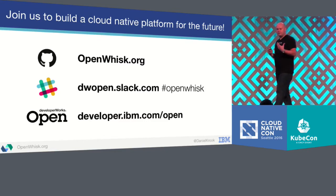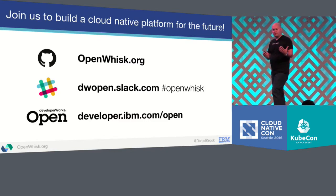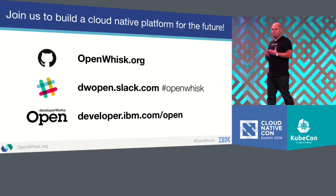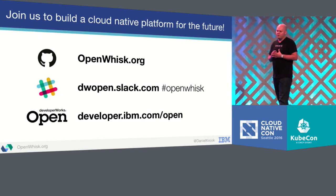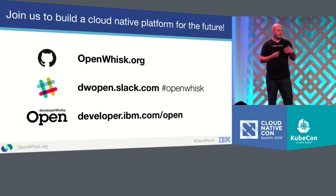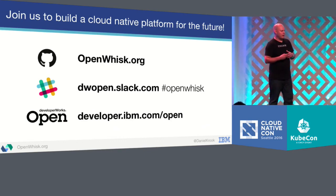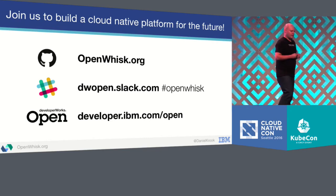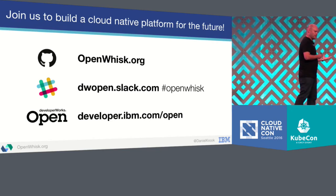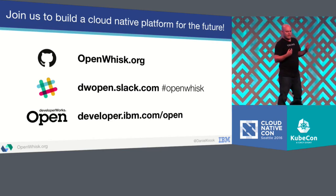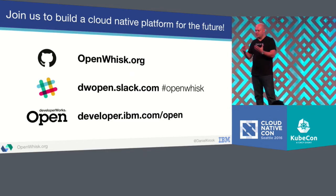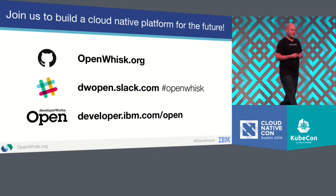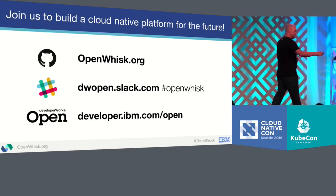We invite you to either try it out as a developer on bluemix.net, or if you're interested in joining the open-source community we're building around OpenWhisk, go to the GitHub repos at openwisk.org, or talk to the developers directly on our public Slack channel. You can also find other IBM open-source projects, such as Amalgamate — a framework for deploying microservices on top of the cloud using Kubernetes — at developerworks.open. Thank you very much.